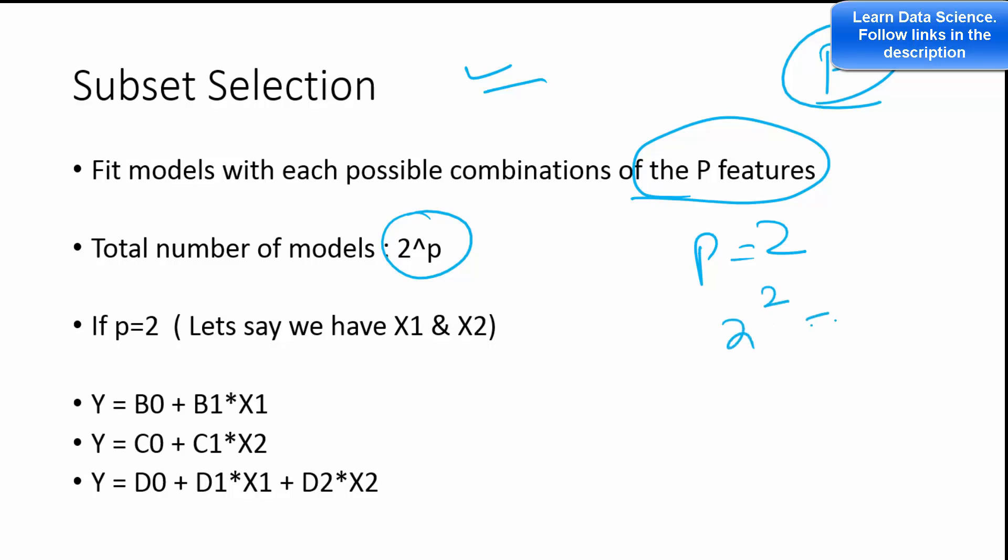The idea is to use every combination. For example, we have X1 and X2, we have only two features or two predictors. So how many models will you have? You will have a model with only X1, with only X2, and with both X1 and X2.